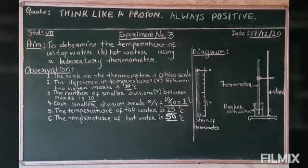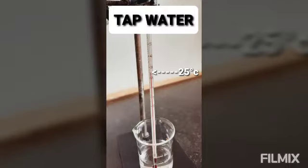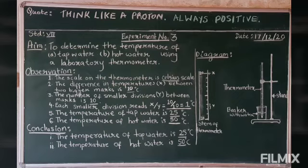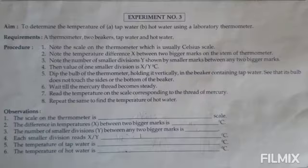The temperature of tap water is 25 degrees Celsius and the temperature of hot water is 50 degrees Celsius. For tap water it is 25 degrees Celsius, and for hot water it is 50 degrees Celsius. Conclusion: the temperature of tap water is 25 degrees Celsius and the temperature of hot water is 50 degrees Celsius. Now photograph your journal.